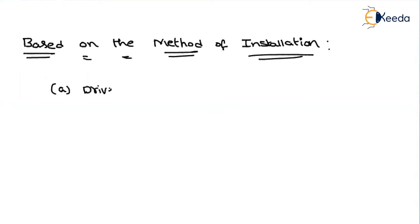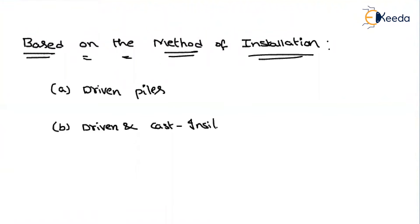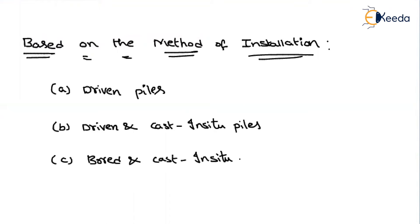Based on the method of installation, there are three types: first, driven piles; second, driven and cast in-situ piles; and third, bored and cast in-situ piles.